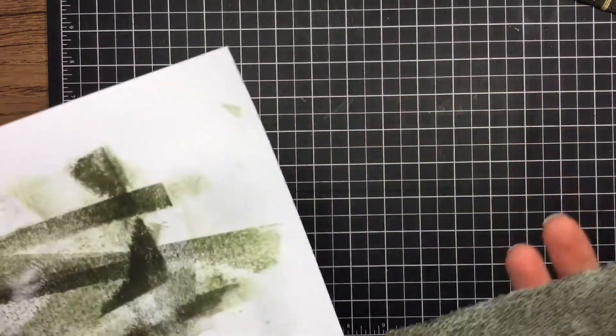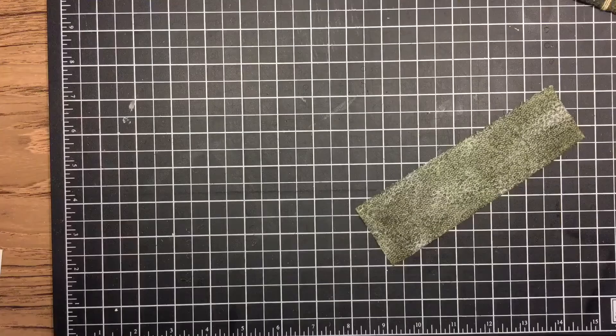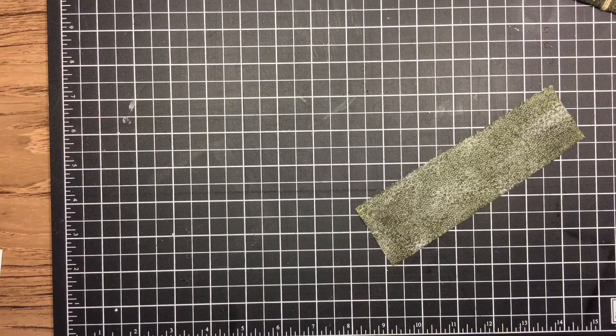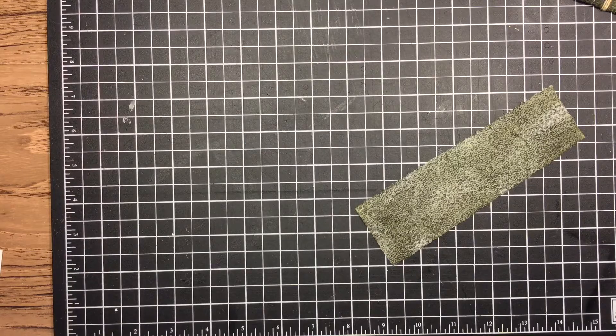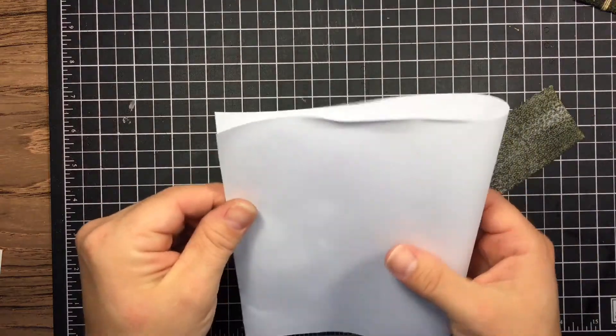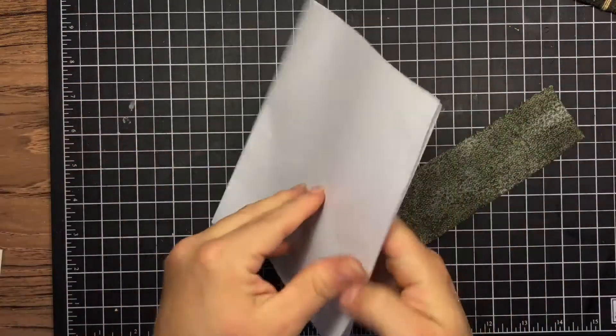Once you have the embossing powder spread all over that, it's time to heat that up. I'm getting a clean piece of paper here to heat that up on. I'll be careful because it's not like VersaMark where it'll stick really super well.